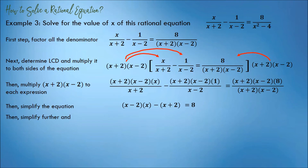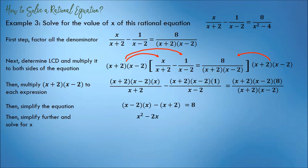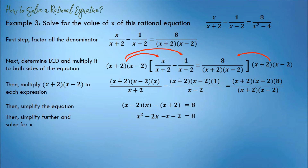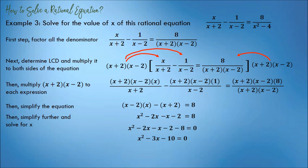Simplify further and solve for x. The first part becomes x squared minus 2x. The second part becomes negative x minus 2. And 8 is just 8. Transpose 8 to the left side so it can be combined with negative 2. Combine like terms: negative 2x minus x is negative 3x, while negative 2 minus 8 is negative 10. That gives us x squared minus 3x minus 10 equals 0.